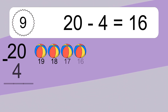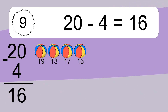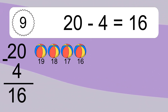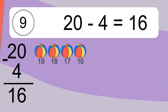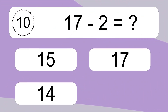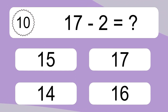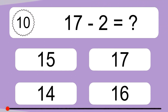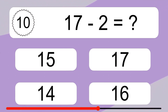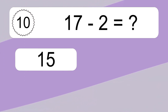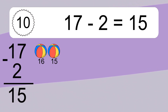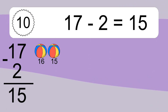20 minus 4 equals what? 20 minus 4 equals 16. Let's count it: 19, 18, 17, 16.